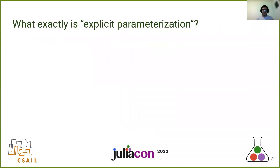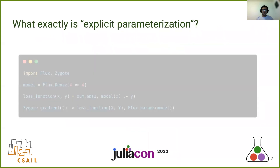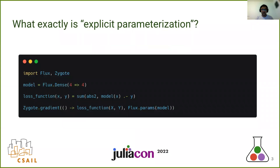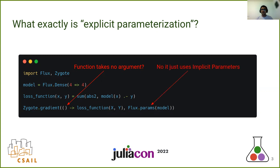So what exactly is explicit parameterization? First, let us see what implicit parameterization is. In this example, we can see that we are calling zygote.gradient with a function which literally takes no arguments. So we're essentially taking the gradients of a function with no argument, which makes very little semantic sense. What Zygote does is it tracks the parameters of the model automatically and just computes the gradient with respect to those. This is known as implicit parameterization.